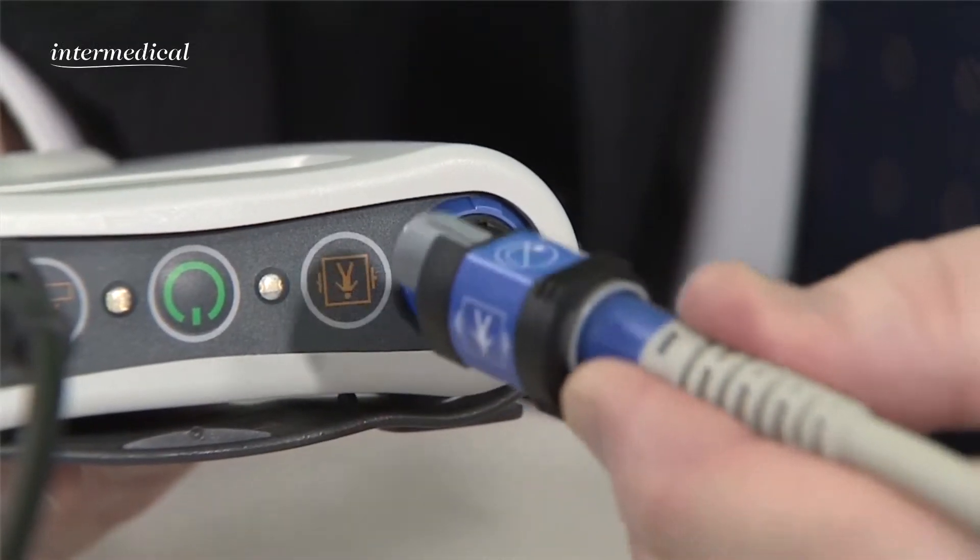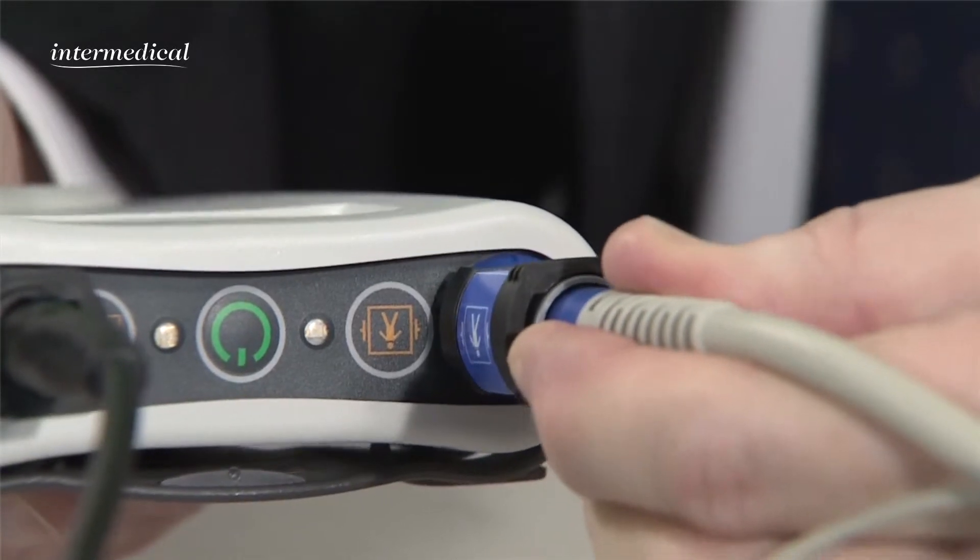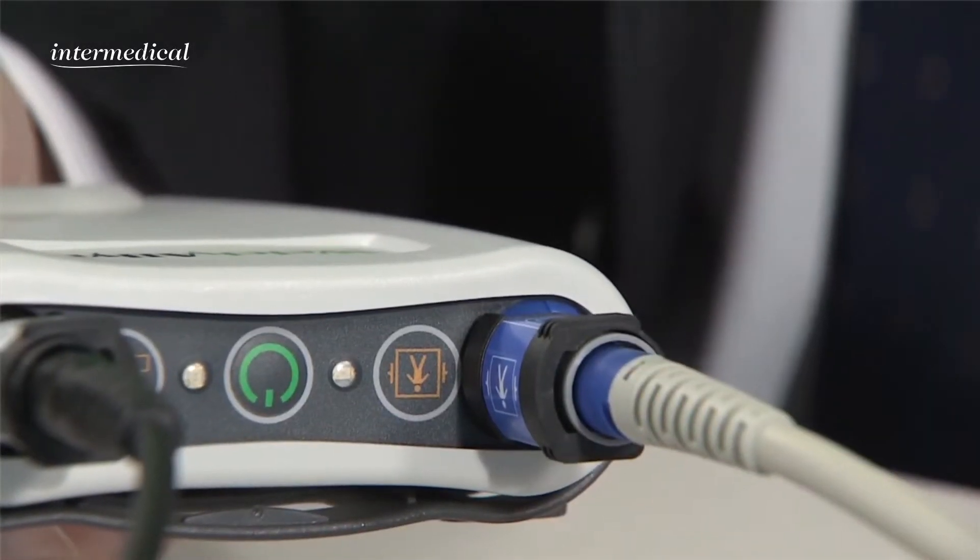The same is true of the patient cable. This time there's a white arrow on top of the cable and again the collar on the inside of the cable points inwards. Those cables won't fit to the ECG any other way.